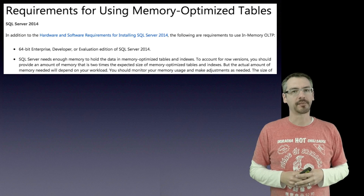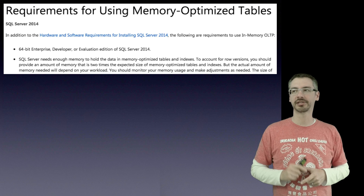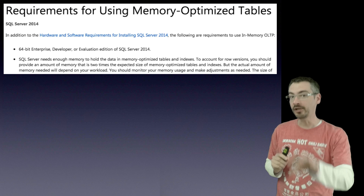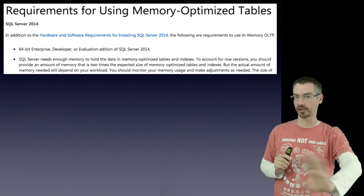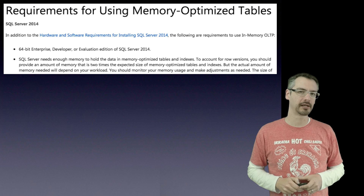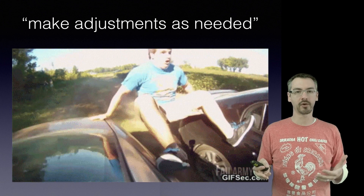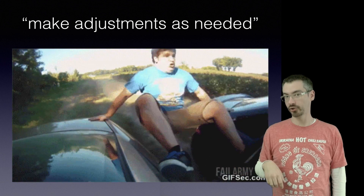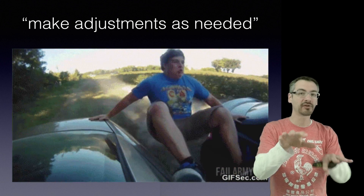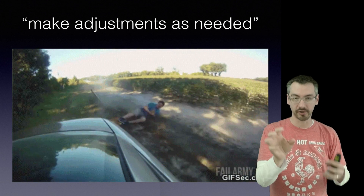Let's look a little deeper at memory-optimized tables. Going in and accounting for row versions, the actual amount of memory needed will depend on your workload. So even if you're not changing the table, you should monitor your memory usage and make adjustments as needed. What do you mean, make adjustments as needed? Most of us, when we deploy a brand new application, don't get the luxury of saying, it looks like I need 128 more gigs of memory — or saying this table design doesn't work, so I'm going to have to stop all applications and migrate everything.